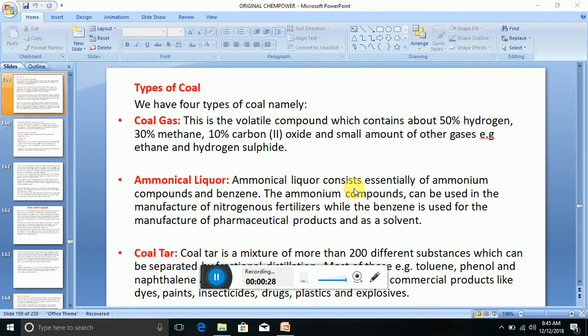So coal gas consists mainly of hydrogen and methane. Ammoniacal liquor, that's the second type of coal. Ammoniacal liquor consists essentially of ammonium compounds and benzene. The ammonium compounds can be used in the manufacture of nitrogenous fertilizers, while the benzene is used for the manufacture of pharmaceutical products and as a solvent.